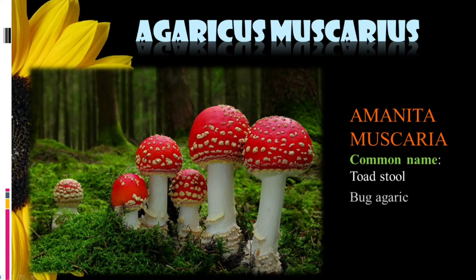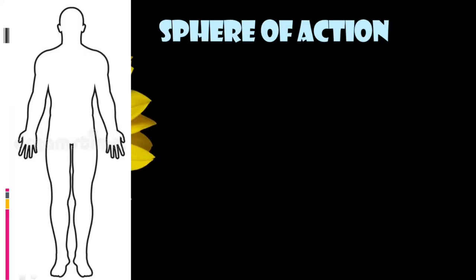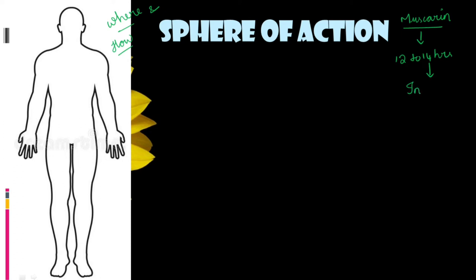The common names are toadstool and bug agaric, and its natural order belongs to fungus. Understanding a drug starts from two things: where the medicine is acting and how it is acting. In Agaricus, the alkaloid muscarin produces symptoms after 12 to 14 hours of intake, with its main action being intoxication of the brain.